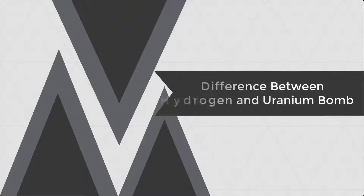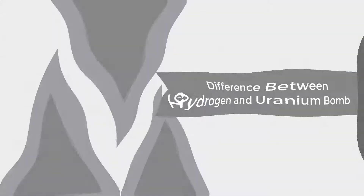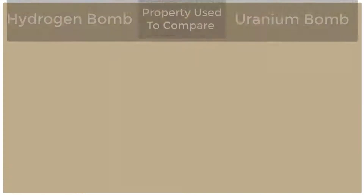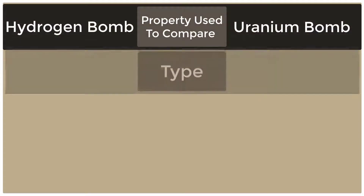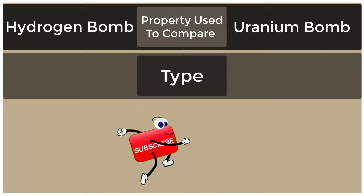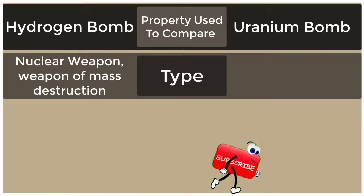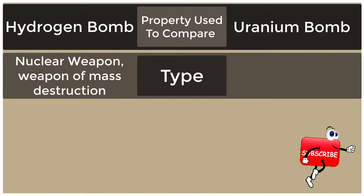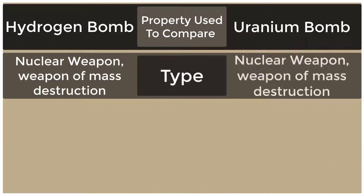Difference between Hydrogen and Uranium Bomb. Type: Hydrogen Bomb is a Nuclear Weapon and Weapon of Mass Destruction. Uranium Bomb is also a Nuclear Weapon and Weapon of Mass Destruction.